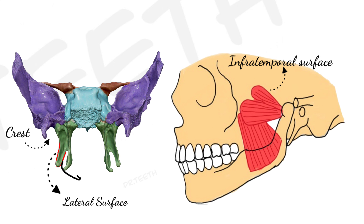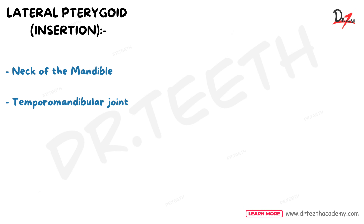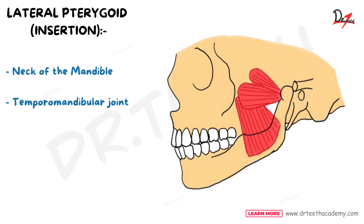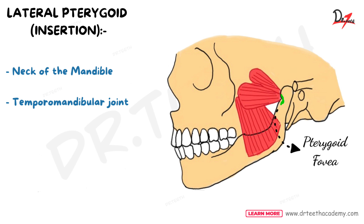The lateral pterygoid plate has two surfaces — the medial surface, which is important for the medial pterygoid muscle we'll discuss next, and the lateral surface. The lower head of the lateral pterygoid originates from the lateral surface of the lateral pterygoid plate. Both heads converge to form a single tendon and insert on the pterygoid fovea on the anterior surface of the neck of mandible, and also on the adjoining articular disc and capsule of the TMJ.